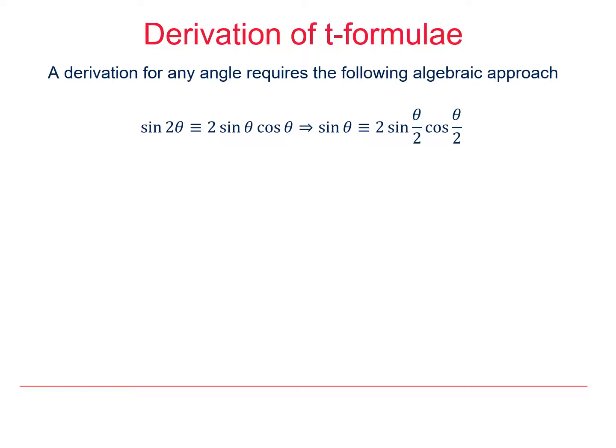So far we've used the triangles to give us acute angles as far as the t-formulae are concerned. But if you want to do it for any angle, we're going to need to use an algebraic approach. So here's sin 2θ written as 2 sin θ cos θ, and we'll change that down into just sin θ equal to 2 sin(θ/2) cos(θ/2). And that will give us a starting point for our algebraic derivation.